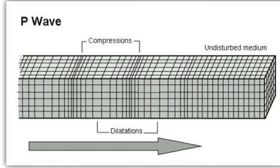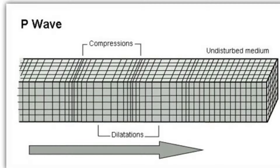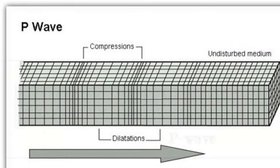Primary waves are also known as pressure waves. They are compressional waves that are longitudinal in nature. Pressure waves travel faster than any other wave through the Earth and can travel through any type of material, at nearly twice the speed of S waves.